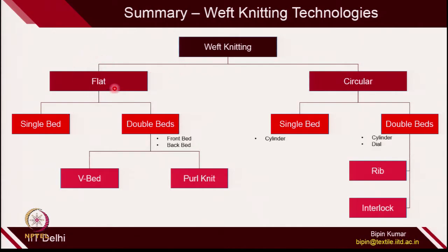In weft knitting, we covered flat knitting technologies where the needle bed is in a flat shape, and circular knitting technologies where needle beds are in cylinder and dial form. In flat bed, we can categorize into single bed — with just 1 needle bed — and double bed, where 2 needle beds (front and back) are used. In double beds, we further have V-bed and purl knitting machines. In circular knitting, single bed machines have 1 cylinder; double bed circular has cylinder and dial beds, including rib and interlocked knitting machines.